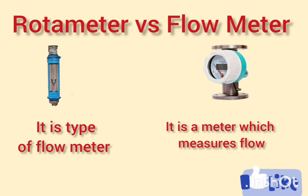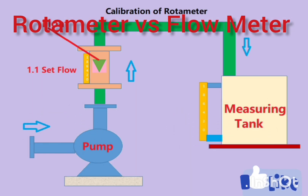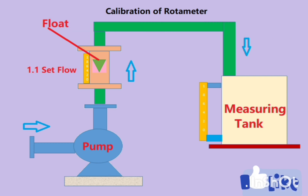This is the setup for calibration of a rotameter. You can use any kind of pump — maybe a centrifugal pump or another type. We install the rotameter we want to calibrate on the discharge side of the pump, and we need a measuring tank to measure what amount of flow is coming through.